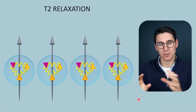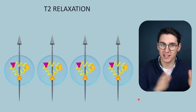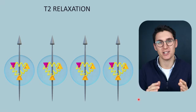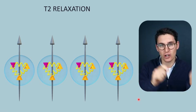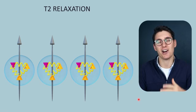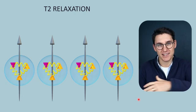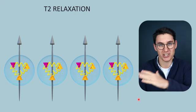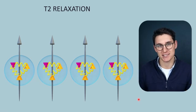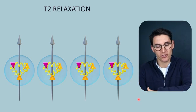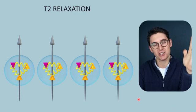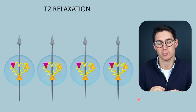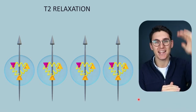Hello everybody and welcome back. In the previous talk we looked at the process of nuclear magnetic resonance, where we placed protons within an external magnetic field and they aligned with that magnetic field, precessing at a set frequency. We then applied a perpendicular radiofrequency magnetic pulse that caused those protons to start resonating in phase with one another, fanning out away from the longitudinal magnetization vector. That net magnetization vector gained more transverse magnetization, and at 90 degrees we completely lost longitudinal magnetization and gained maximum transverse magnetization. That process of NMR caused loss of longitudinal magnetization and gain of transverse magnetization.